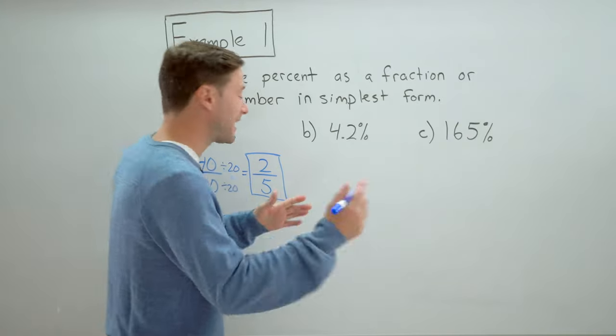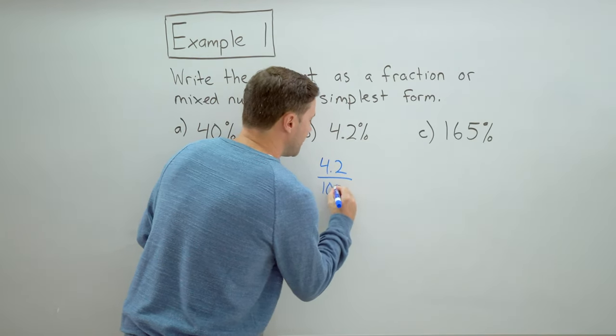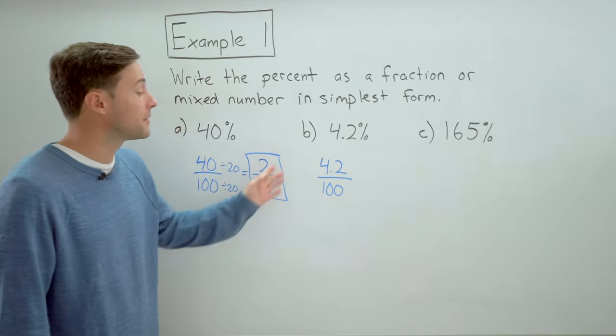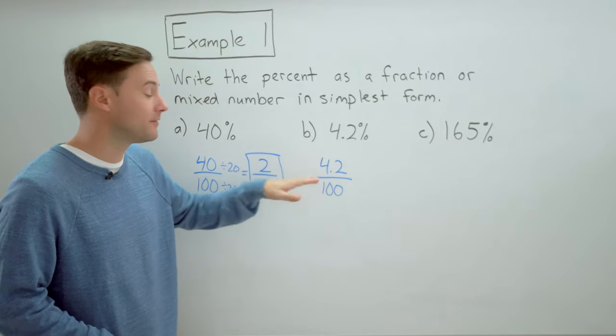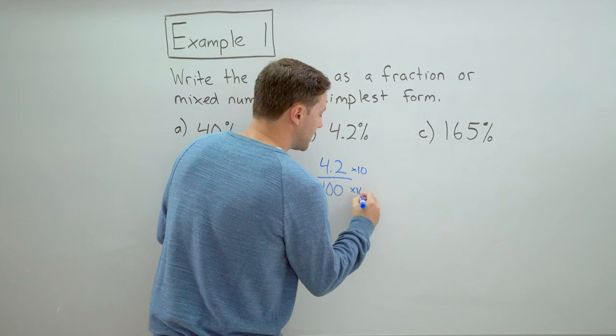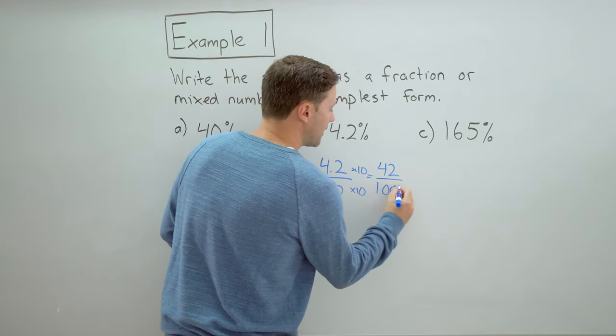Four point two percent. Same thing. Four point two over one hundred. We don't really want a decimal in the fraction. So the first thing I'm going to do is multiply the numerator and denominator by ten to get rid of the decimal point.